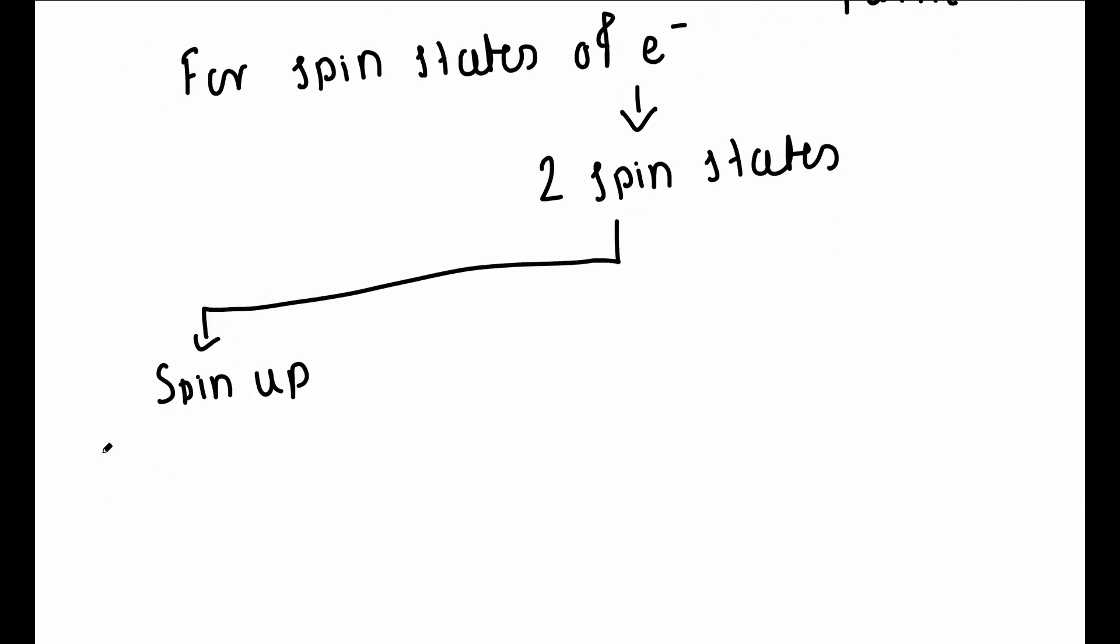The spin up state, which is denoted as ket 0. And the spin down state, which is denoted as ket 1.